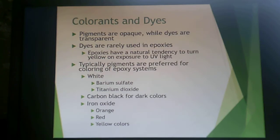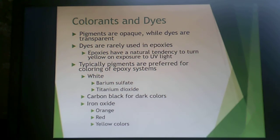Colorants and dyes are also used. In plastics, pigments are generally preferred over dyes — dyes are transparent while pigments are opaque. Epoxies have a natural tendency to yellow, and the opacity of pigments can help prevent that yellowing. Pigments preferred for coloring epoxy systems include barium sulfate or titanium dioxide for white, carbon black for dark colors, and iron oxide for orange, red, or yellow colors.